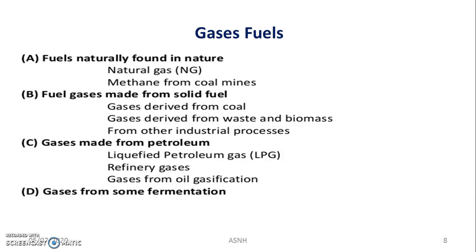These are the gaseous fuels. The first type is fuels naturally found in nature, such as natural gas and methane from coal mines. The second type is fuel gases made from solid fuels, with three subcategories: gases derived from coal, gases derived from waste and biomass, and gases from other industrial processes. Third is gases made from petroleum products such as LPG, refinery gases, and gases from oil gasification. Fourth is gases from fermentation processes — the best example being biogas.